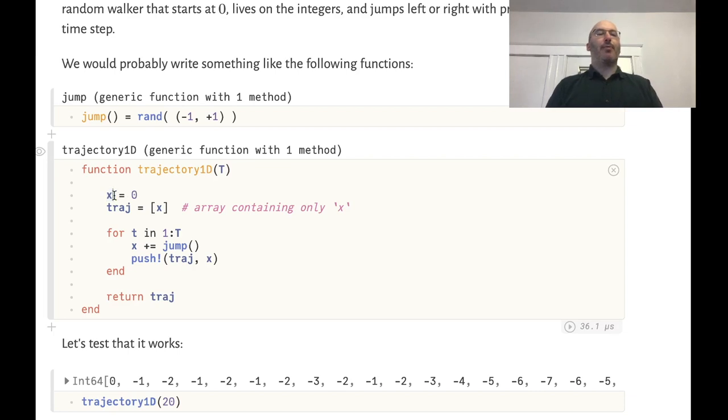The walker has a single variable x which is an integer which will start at 0 and will accumulate its positions in this variable called traj for trajectory, and initially it will be a vector that just contains the current value of x which is 0.